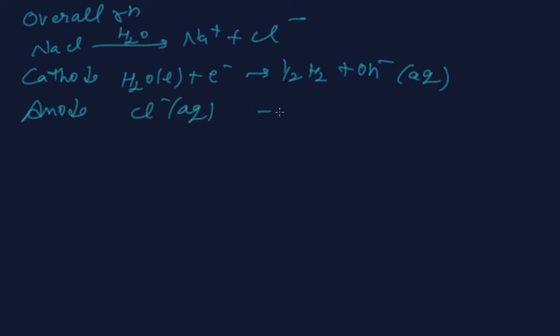Now the overall reaction: sodium chloride is broken down in water, Na+ plus Cl-. At cathode, H2O liquid plus electron gives you ½H2 and OH- aqueous. And at anode, Cl- aqueous will give you ½Cl2 plus electron. The thing which we are getting is the unexpected result.